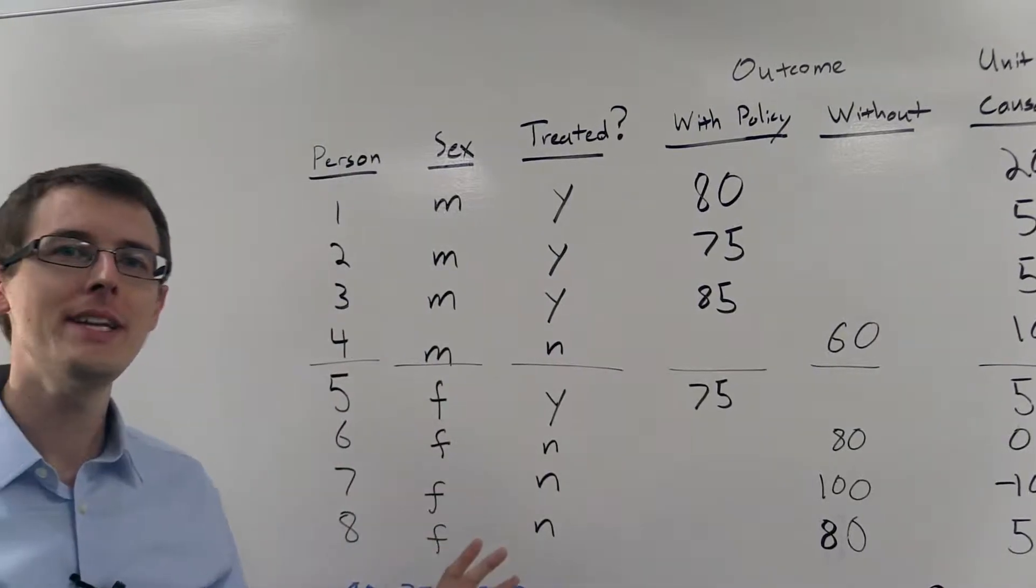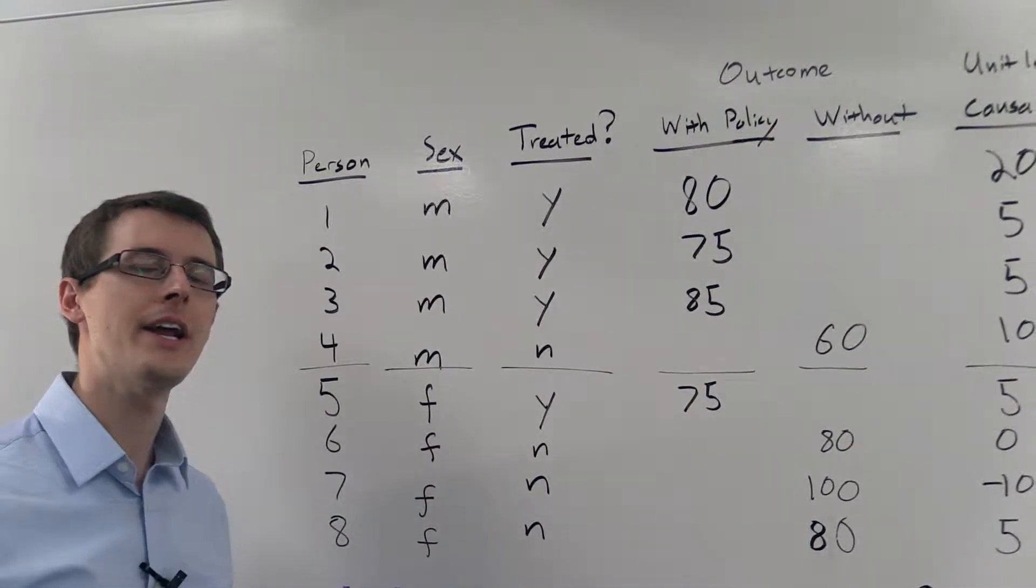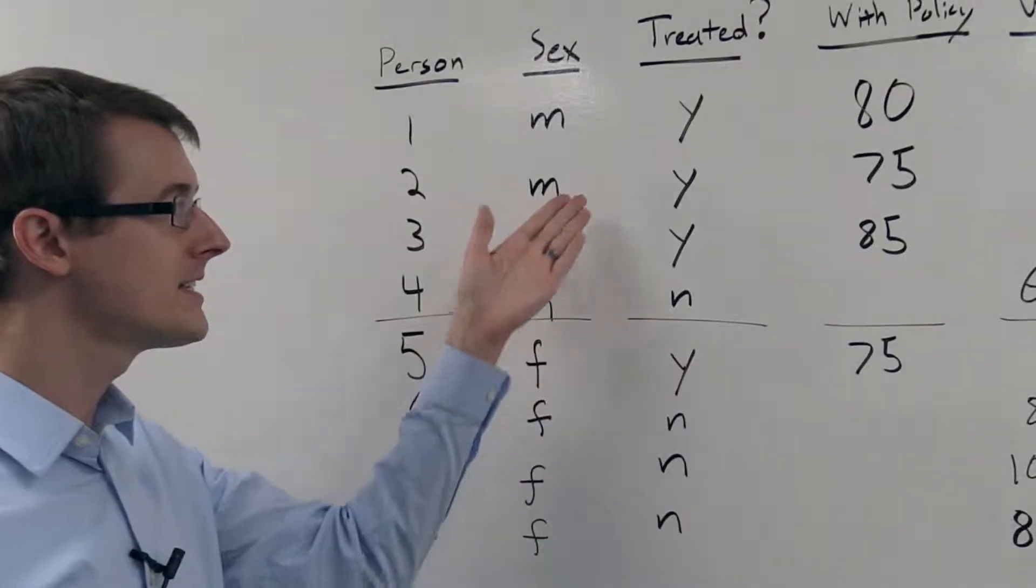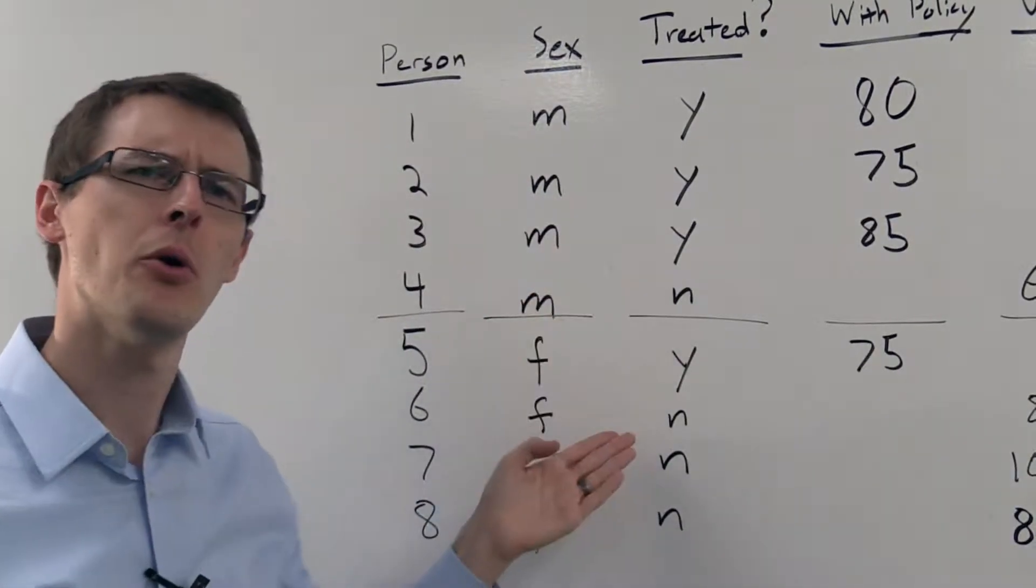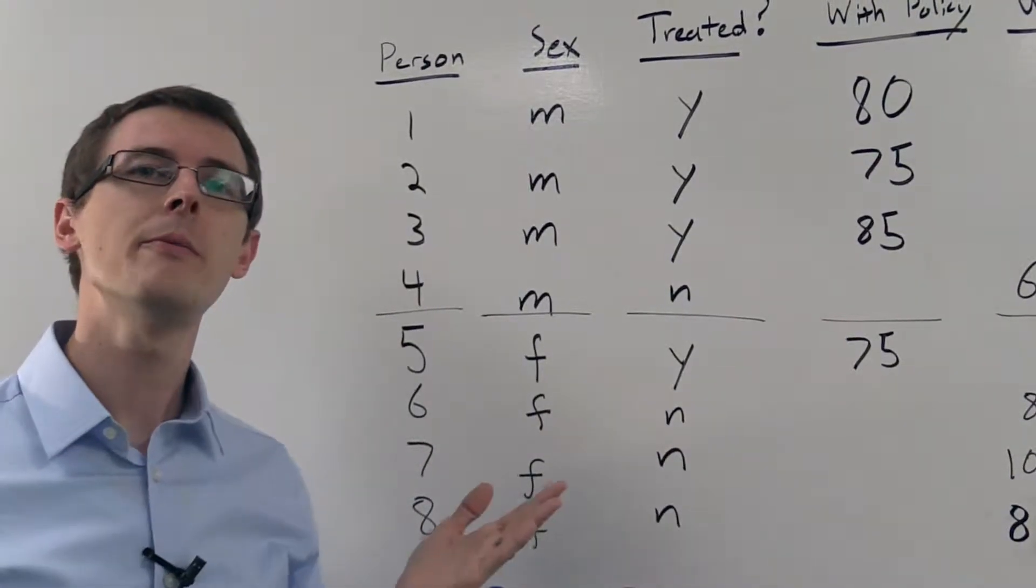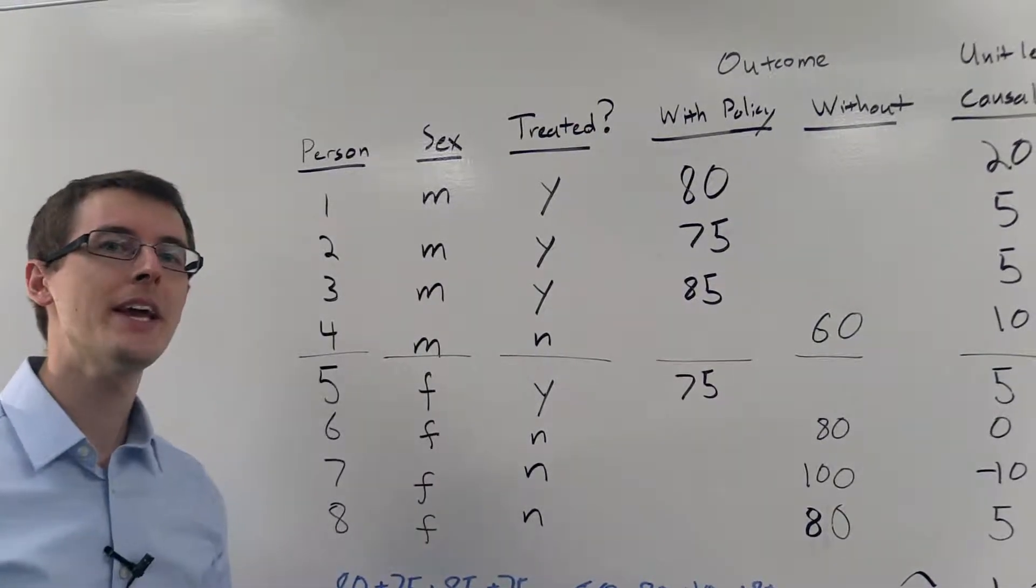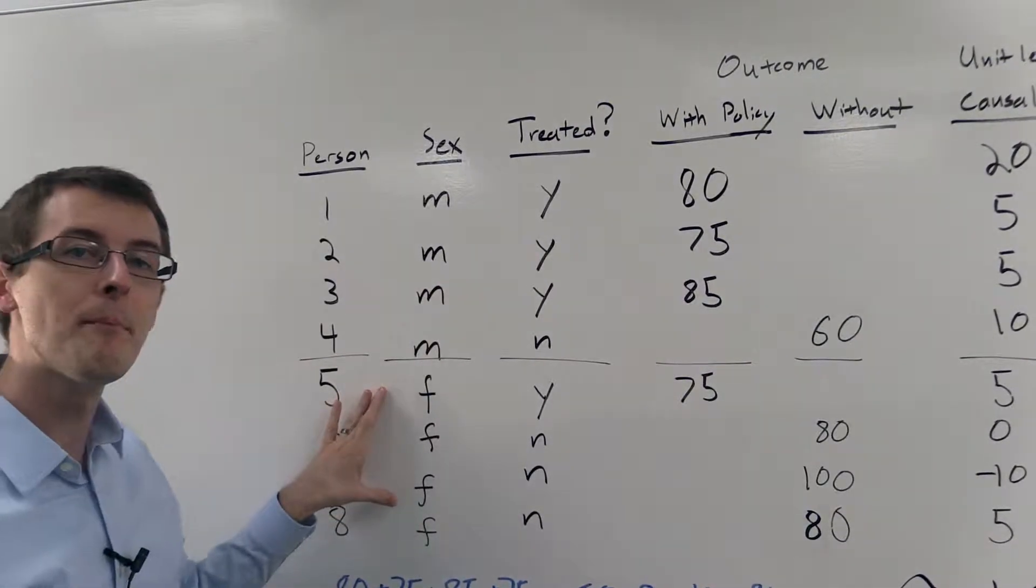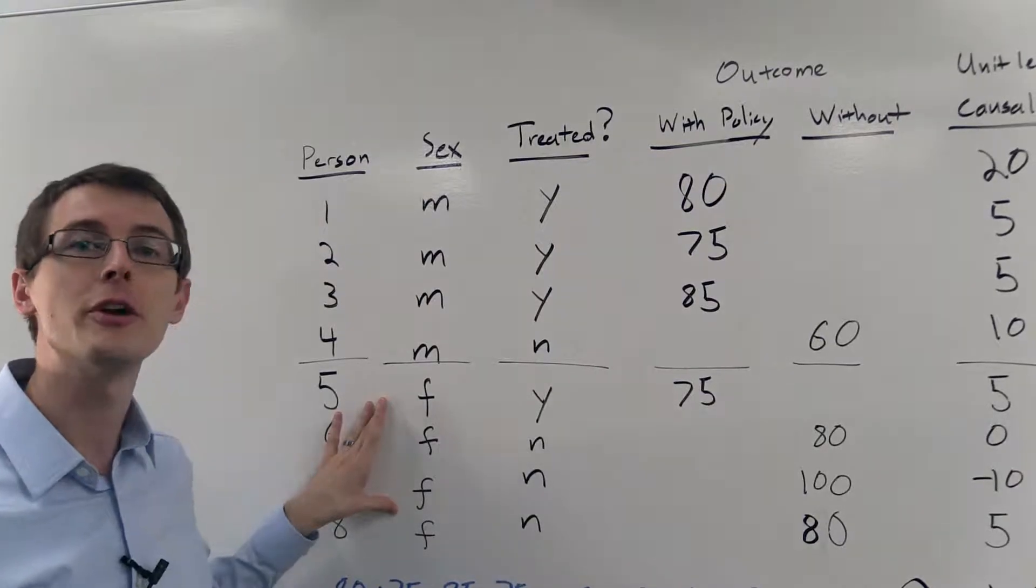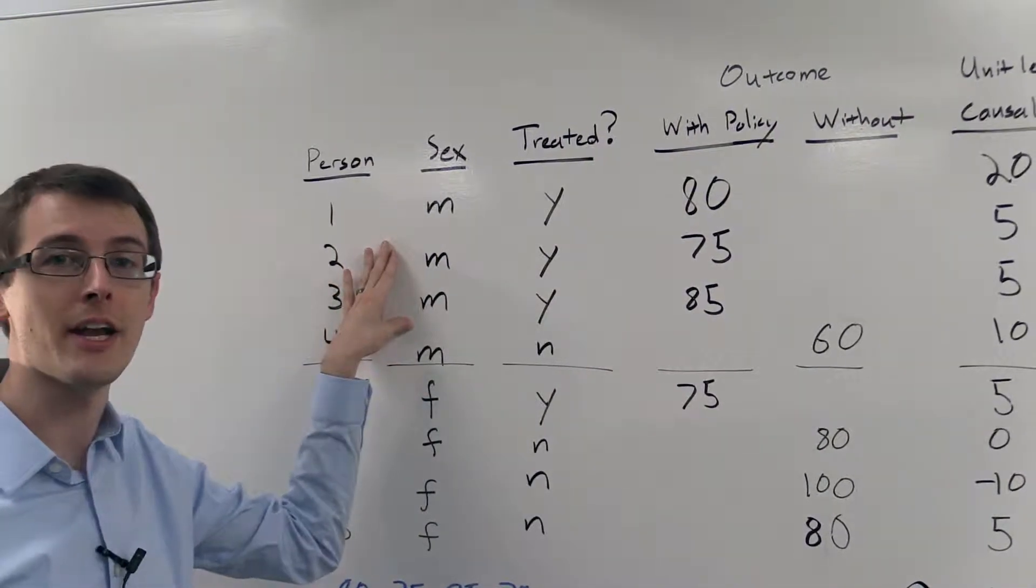So we see that treatment doesn't look like it's randomly assigned here. It seems to be correlated with gender. 75% of men are treated, but only 25% of women are treated. So what can we do? Well, under the unconfoundedness assumption, we can assume that among the females, treatment is randomly assigned, and among men, treatment is randomly assigned.